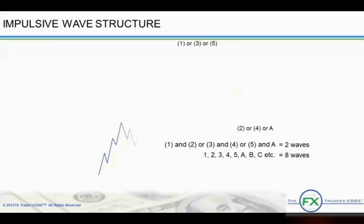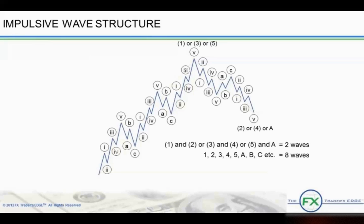In wave theory, this impulsive wave structure is called wave form. Whenever we look at wave form, we start with the larger time frame and count the basic 5-wave impulse move followed by a 3-wave corrective move, totaling 8 waves. Moving to a shorter time frame, 5 waves turn into 21 waves and 3 waves into 13 waves. One complete cycle has 8 waves, and subdividing further, the next cycle has 34 waves, followed by 144 waves.